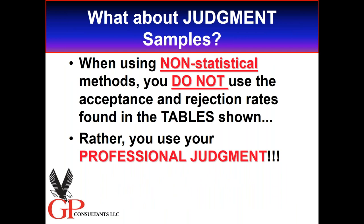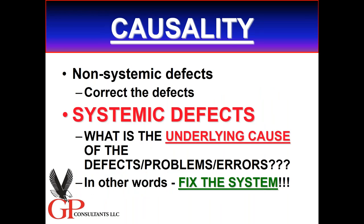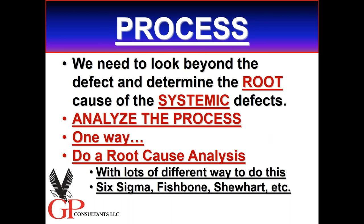What about judgment samples moving away from statistics? You don't use acceptance or rejection rates — you use your professional judgment. But be careful about using judgment samples, as they can sometimes be problematic. Last couple of things: causality. You've done your analysis, you've gotten your big data — now I need to find out what caused these defects. There are lots of things we can do — a root cause analysis. If these are non-systemic defects, fix the defects you found. If these are systemic defects, you need to determine the underlying cause of those problems or errors — in other words, fix the system. We need to look beyond defects and determine the root cause. Lots of different ways to do this — the Six Sigma study, fishbone and Ishikawa diagrams.